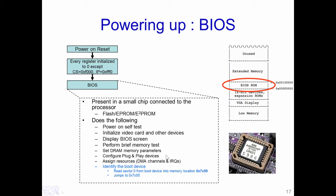Then plug-and-play devices are configured: all plug-and-play devices are queried and the BIOS determines how much memory is required for each device, which is then allocated. After that, the BIOS assigns resources to DMA channels and the various IRQs (interrupt requests). From our perspective, what is important is the next step where the BIOS identifies the boot device — the device most likely holding the operating system. It reads sector 0 from that boot device into memory location 0x7C00.